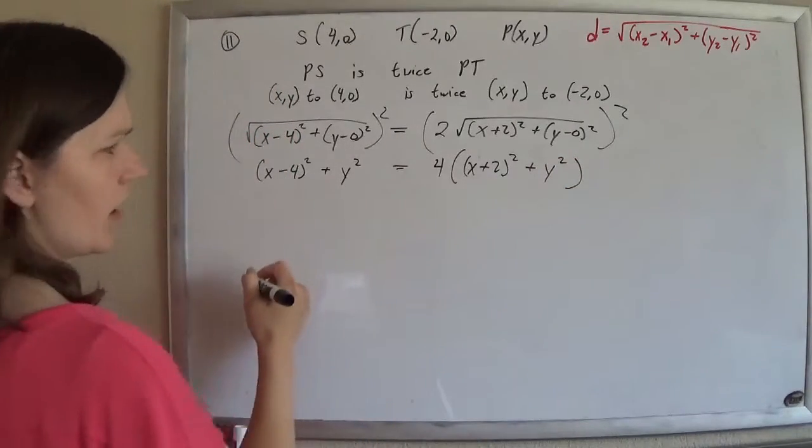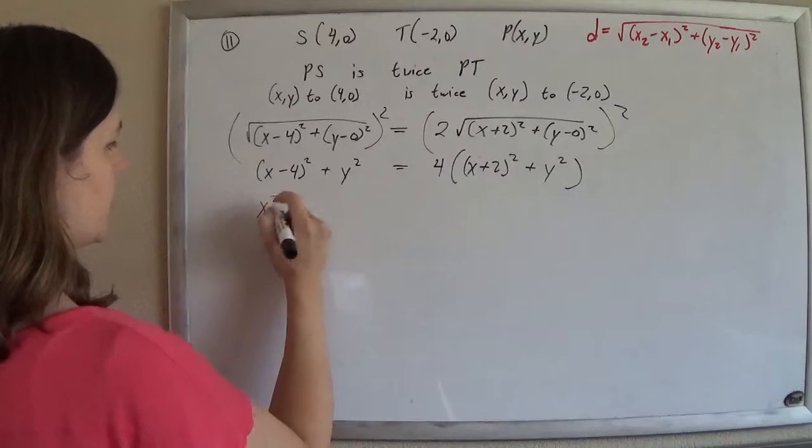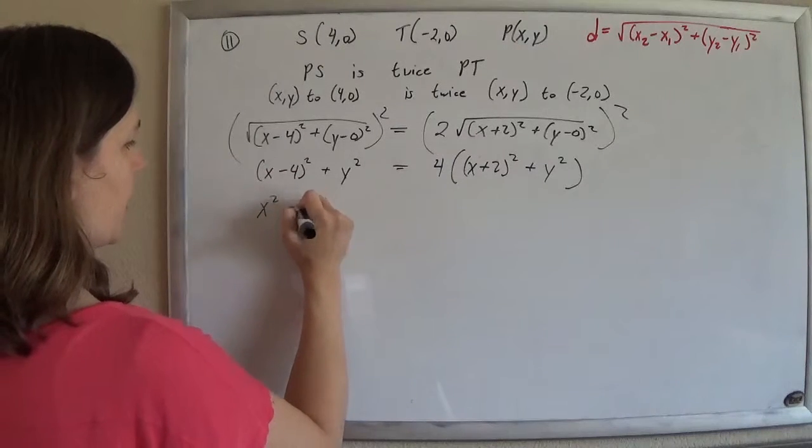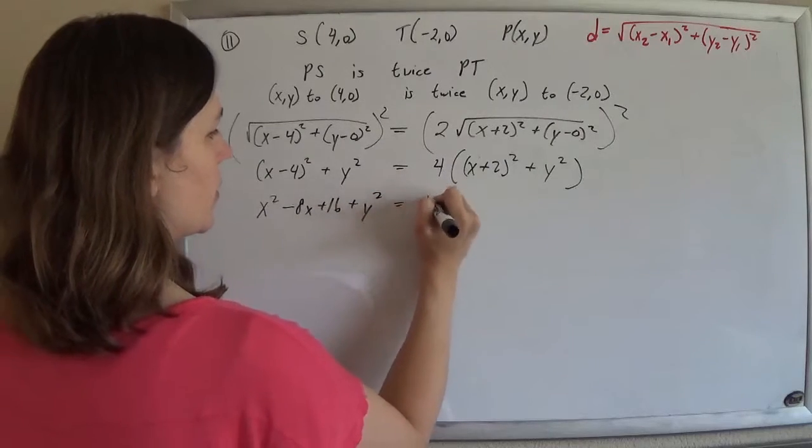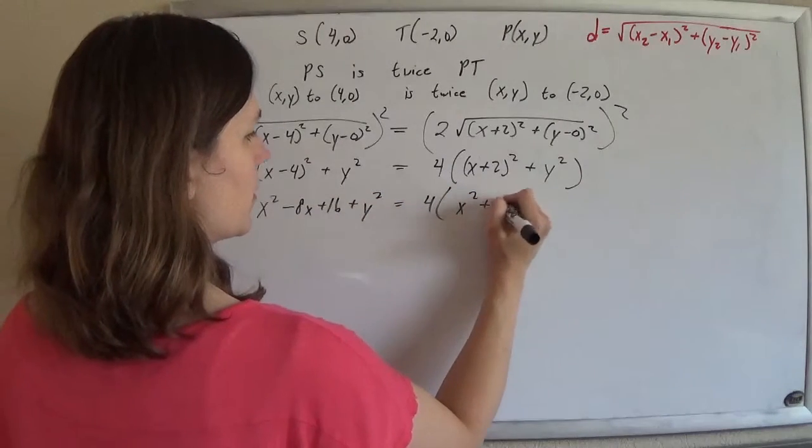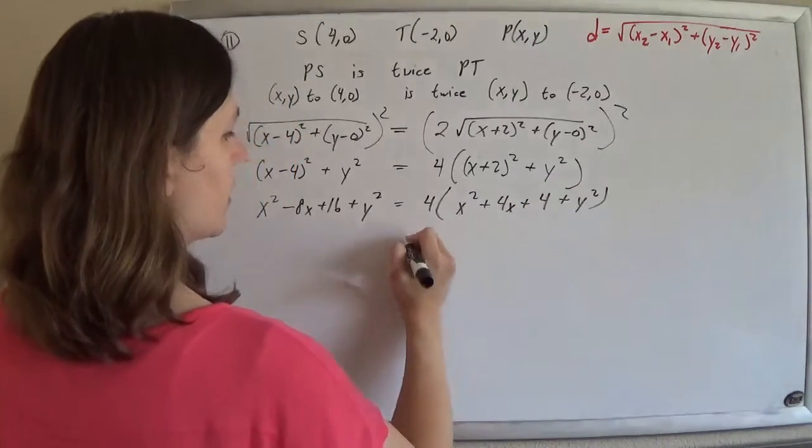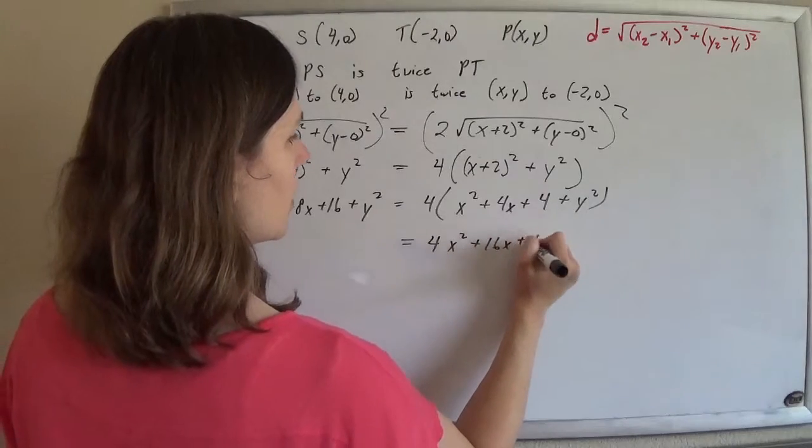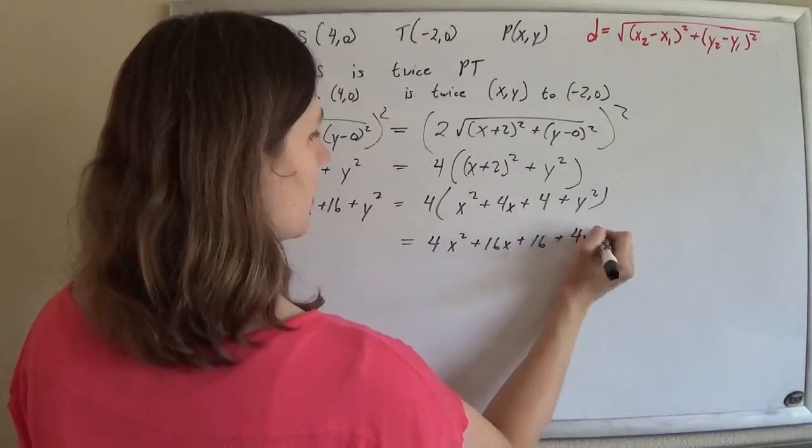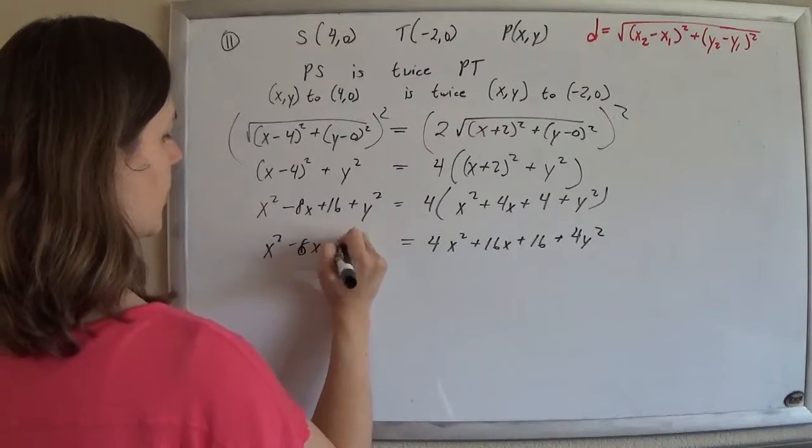And then I'll go ahead and foil this stuff out, expand it to see what's going on. So I've got x² minus 8x plus 16 plus y² equals 4 times x² plus 4x plus 4 plus y². And then just distribute the 4, and then take it from here.